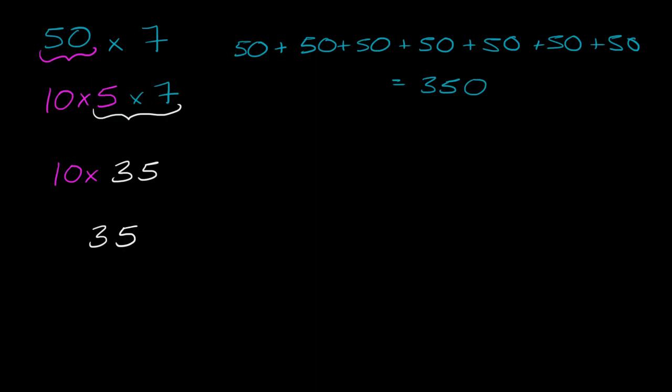Now I want to do that 0 in that same color. It's going to be 350. Now you might realize, hey, look, I could have just looked at this 5 right over here, multiplied the 5 times the 7, and have gotten the 35.